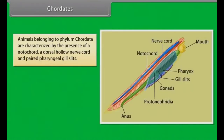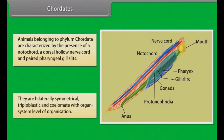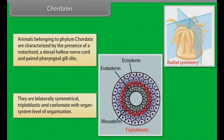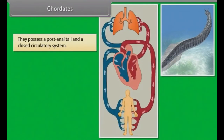Animals belonging to phylum Chordata are characterized by the presence of a notochord, a dorsal hollow nerve cord, and paired pharyngeal gill slits. They are bilaterally symmetrical, triploblastic and coelomate with organ system level of organization. They possess a post-anal tail and a closed circulatory system.